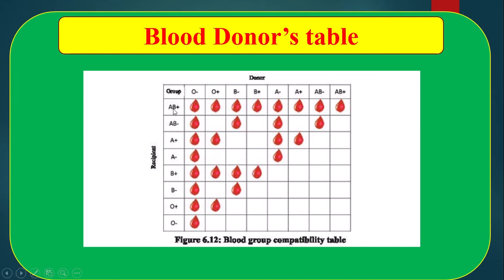Blood group AB positive can receive from O positive, O negative, B negative, B positive, A negative, A positive, AB negative, and AB positive. That means blood group AB positive can receive from A positive, B positive, A negative, B negative, as well as AB negative and AB positive. Blood group AB negative can receive from only the negative blood groups: O negative, A negative, B negative, and AB negative.